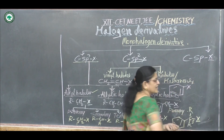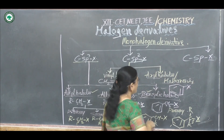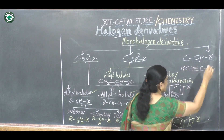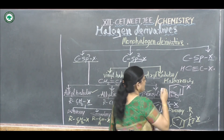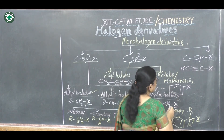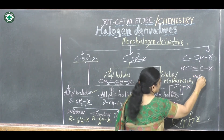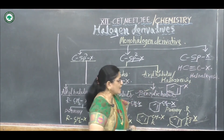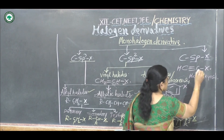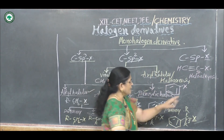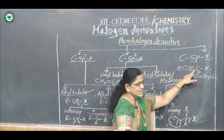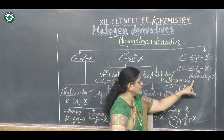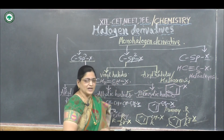Third type is sp-X: halogen atoms bonded to an sp type of hybridized carbon atom. For example, CH≡C-X. These are called haloalkynes. The halogen is bonded to a carbon that carries a carbon-carbon triple bond, hence it is an sp type of hybridized carbon atom.